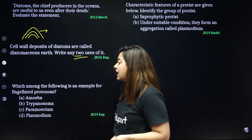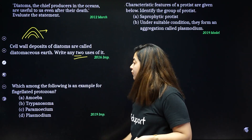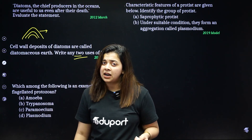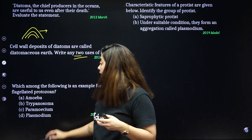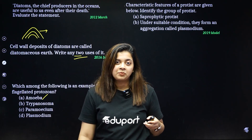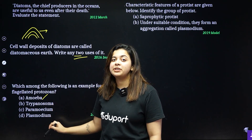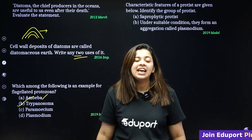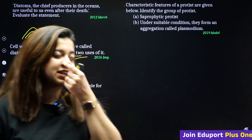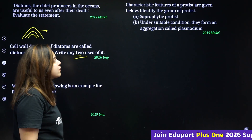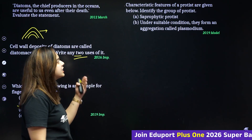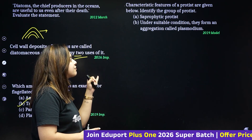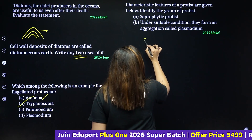Which among the following is an example of flagellated protozoans? Amoeba is an amoeboid protozoan. Paramecia is a ciliated protozoan. Trypanosome comes under flagellated protozoans. Characteristic features: saprophytic protists that, under suitable conditions, form an aggregation called plasmodium — that is slime mold.